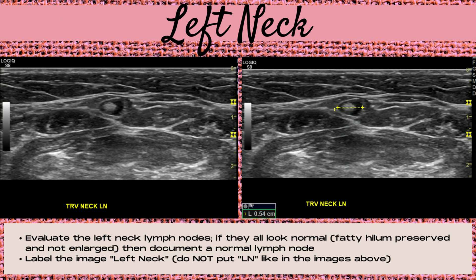Moving on to the transverse left neck — evaluate the left neck lymph nodes, and if they all look normal, meaning the fatty hilum is preserved and there's not a thickened outer cortex, document one of the largest normal lymph nodes. Label the image 'left neck' — do not put 'lymph node.' The measurements you take will depend on your site's protocol. Some sites measure in all three dimensions, some care mostly about the AP dimension, and others about the length. The most common is either all three measurements or the AP measurement.